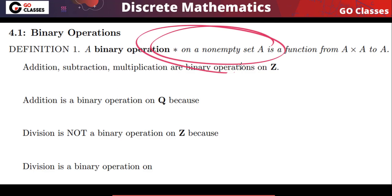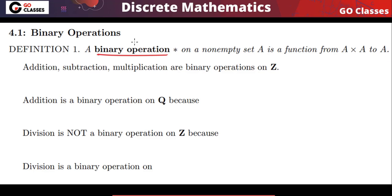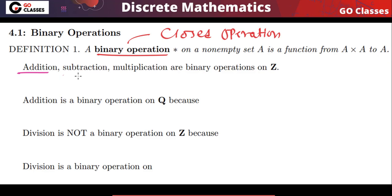Binary operation on a non-empty set is a function from A cross A to A — it takes two elements of the set and gives another element of the set. So binary operation is basically closed operation. For example, addition, subtraction, and multiplication are binary operations on the set of integers.